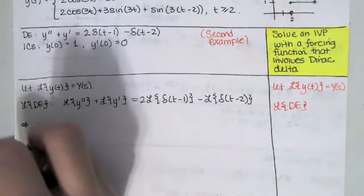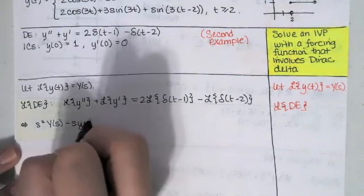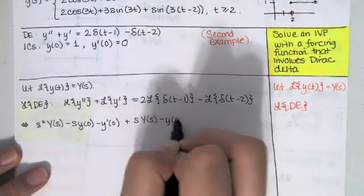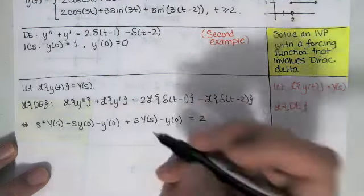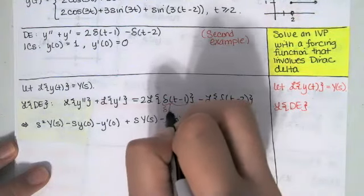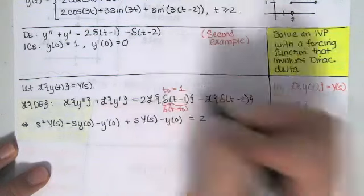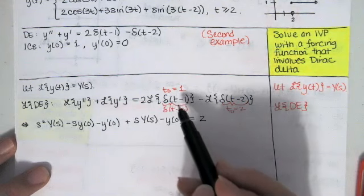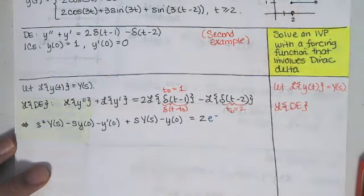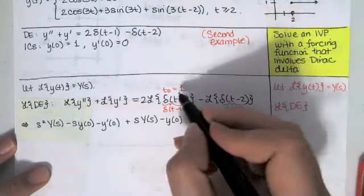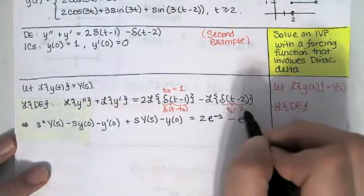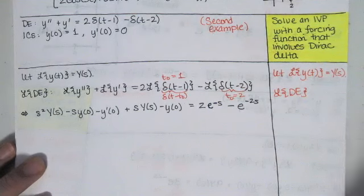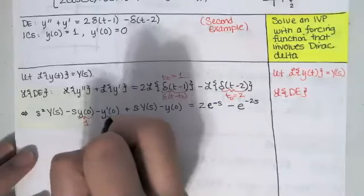The Laplace transform of y double prime is s squared times Y of s minus s times y of 0 minus y prime of 0. For the delta functions, the Laplace transform of delta at t minus t naught is e to the negative s times t naught. If t naught equals 1, this gives e to the negative s; if t naught equals 2, we get e to the negative 2s. We then substitute our initial conditions: y of 0 equals 1 and y prime of 0 equals 0.